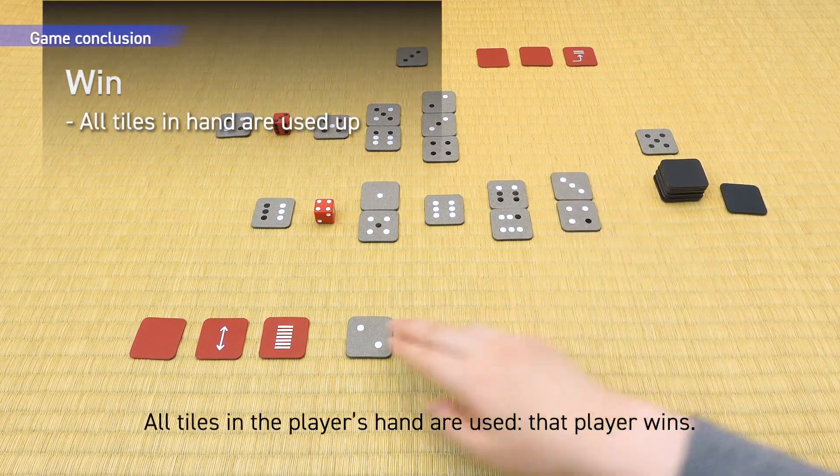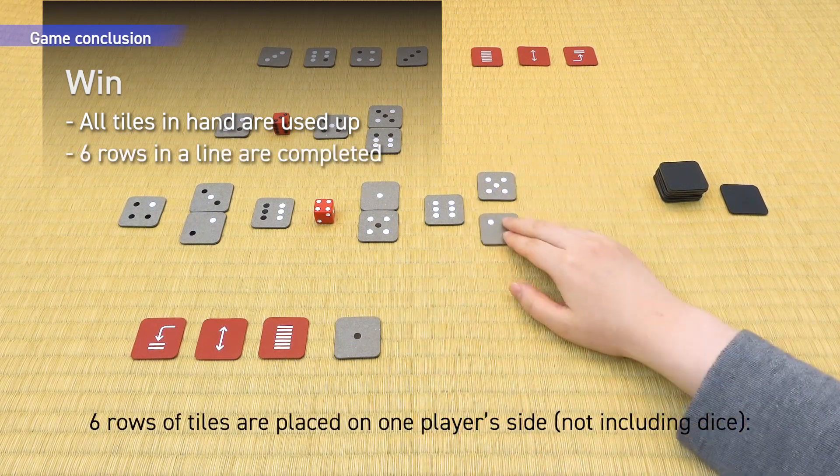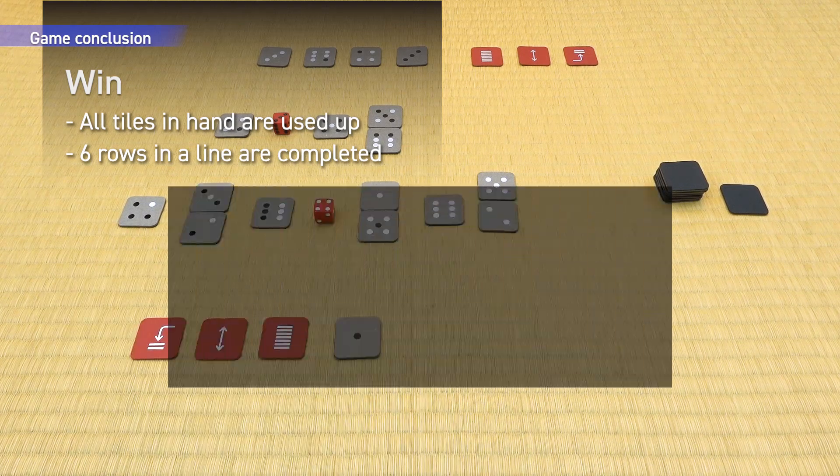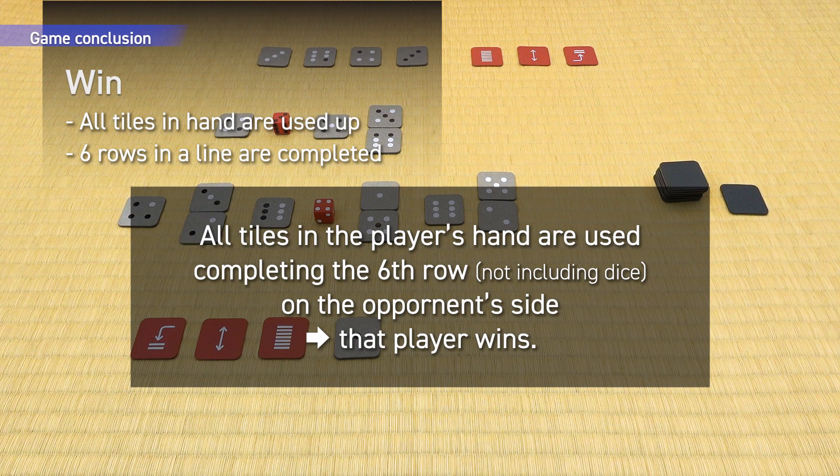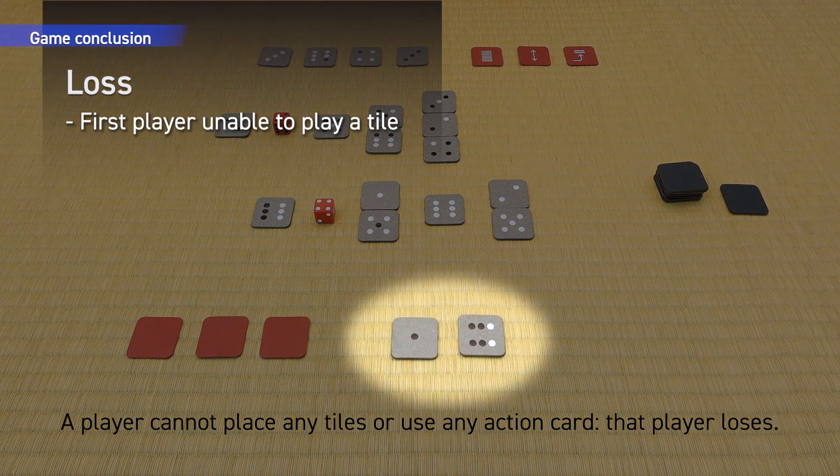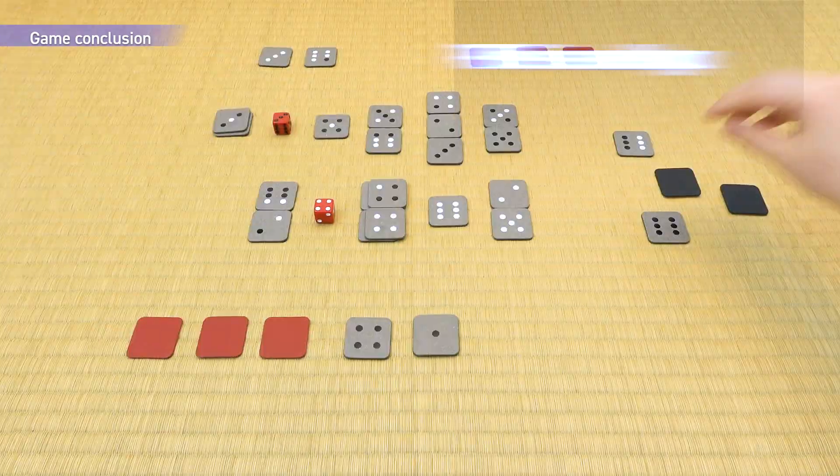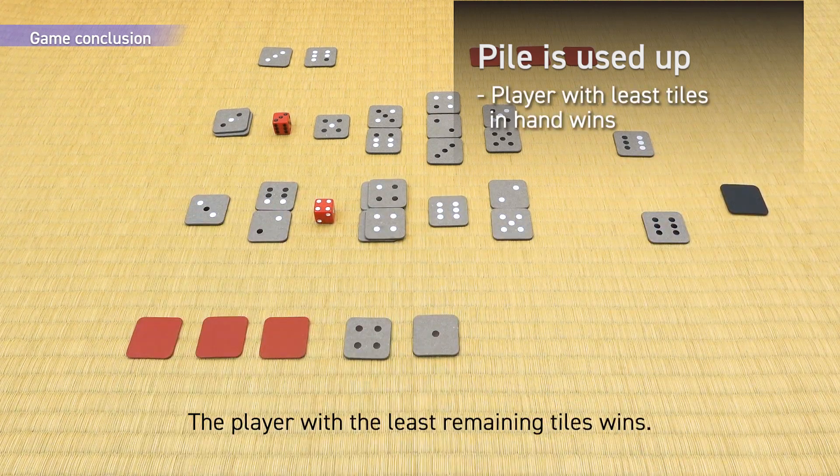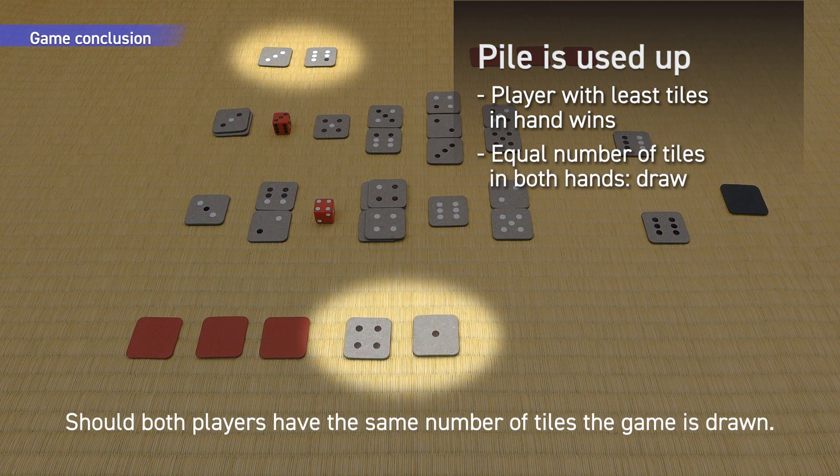All tiles in the player's hand are used—that player wins. Six rows of tiles are placed on one player's side, not including dice—that player wins. All tiles in the player's hand are used, completing the sixth row on the opponent's side—that player wins. A player cannot place any tiles or use any action card—that player loses. The last tile: When the last tile is played, the player with the least remaining tiles wins. Should both players have the same number of tiles, the game is drawn.